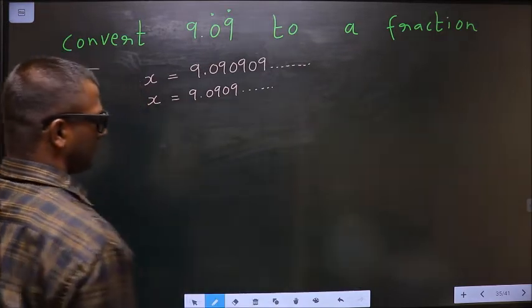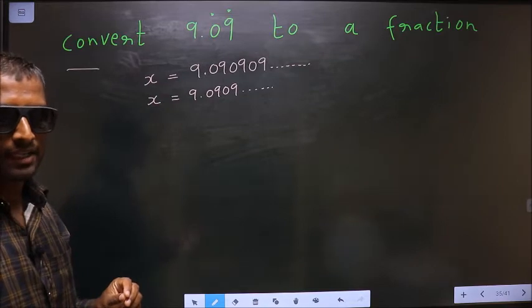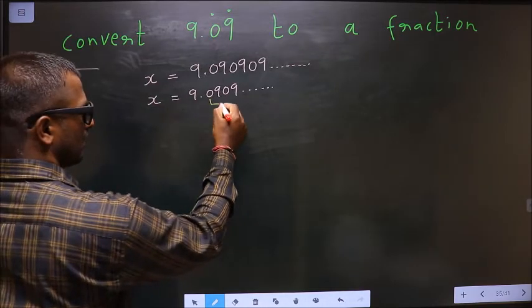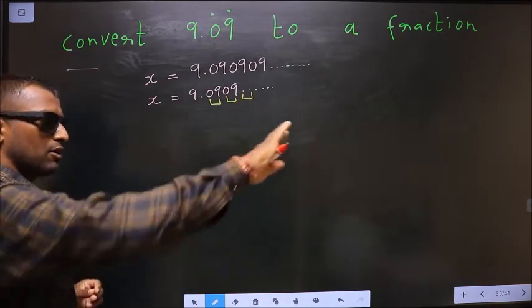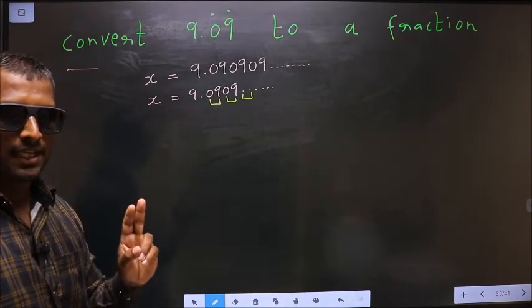Now you check how many numbers are being repeated in this. So 0 and 9, 0 and 9, 0 and 9 are kept on repeating. That means 2 numbers are being repeated.